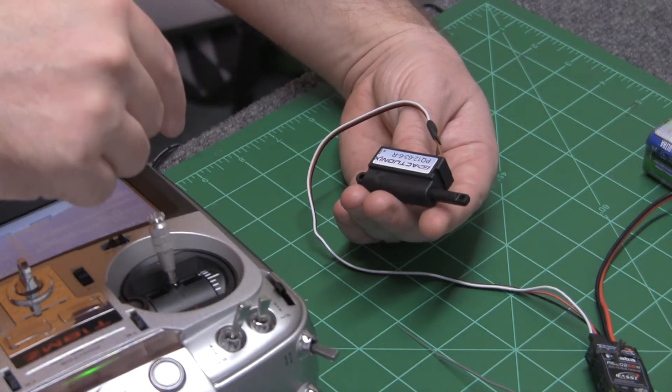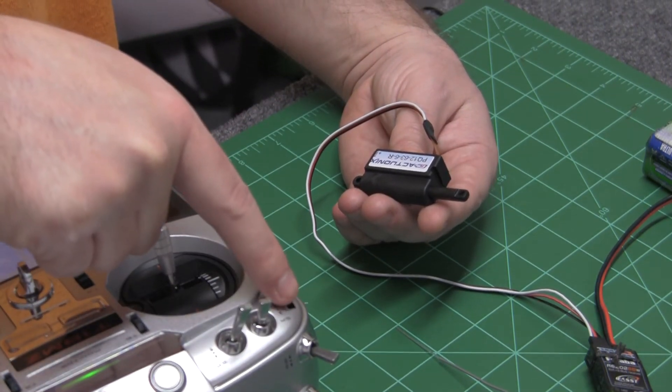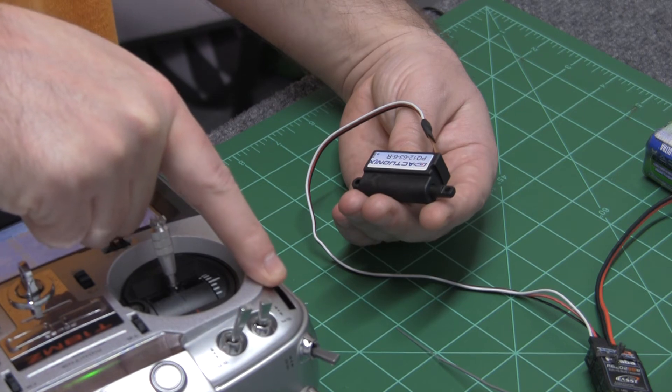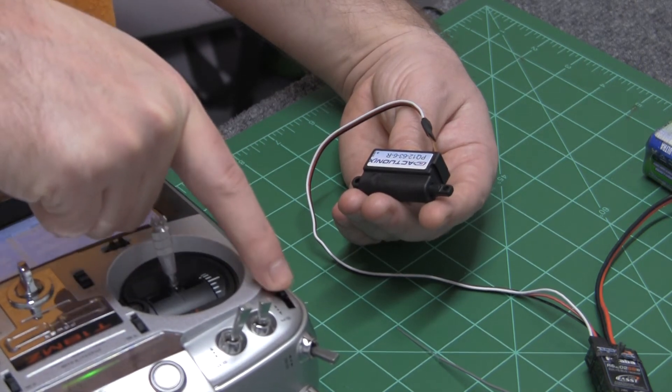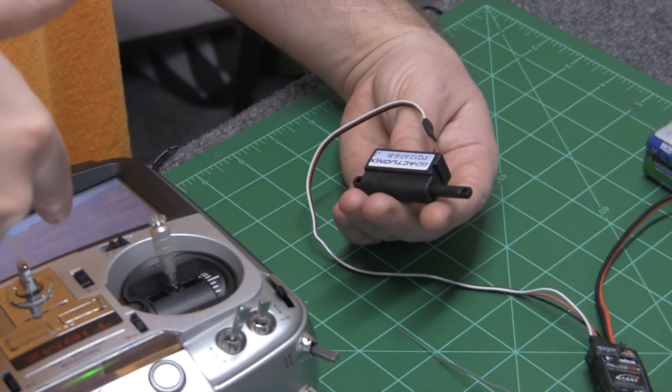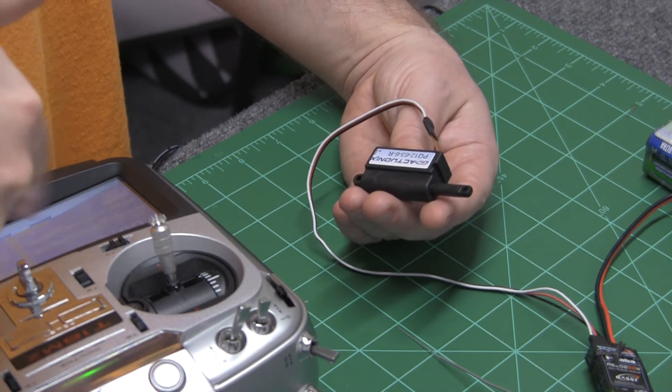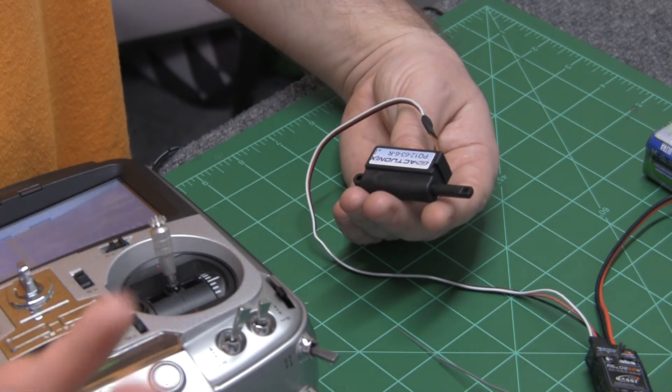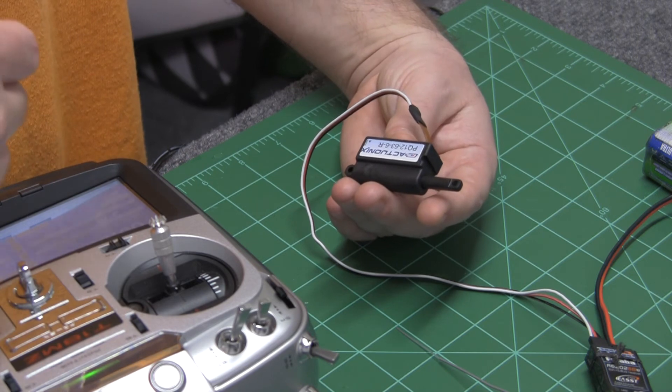And this is really slow because of the voltage and it's a higher gear ratio. But, you can adjust endpoints in the radio. Just like a servo, you can do subtrim, so mid-range. You can have it on a three position switch if you want. You can have it on a two position switch.